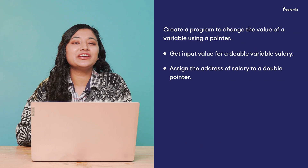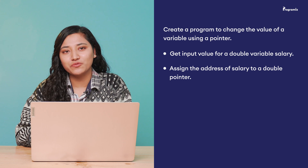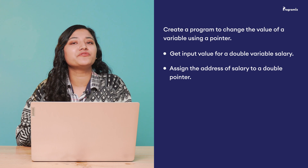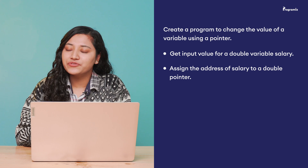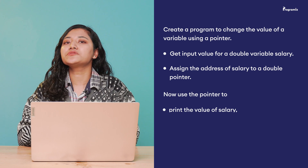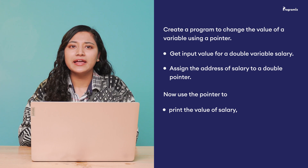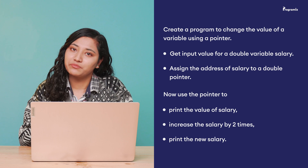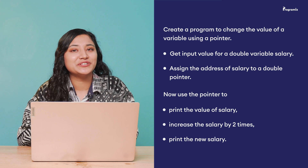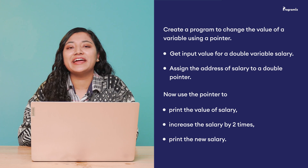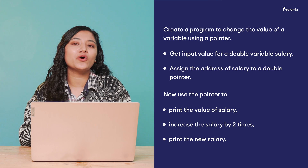Now for a programming task to revise what we've learned: create a program to change the value of a variable using a pointer. Get input for a `double` variable `salary`, assign the address of `salary` to a double pointer, use the pointer to print the value of `salary`, then increase the salary by two times and print the new salary. You'll find the answer in our GitHub repository — the link is in the video description.